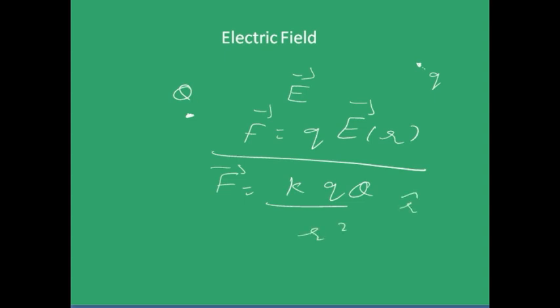What can we say from these two? You get like E is K capital Q by R square. And don't forget to include R cap because E is a vector. So, I hope everything is clear. That's it. And let's move further.